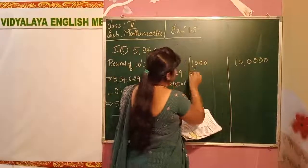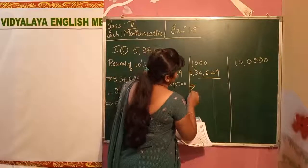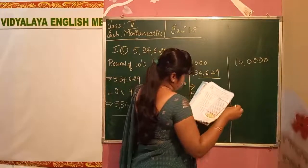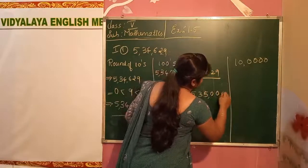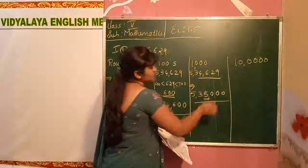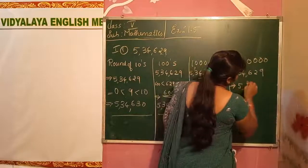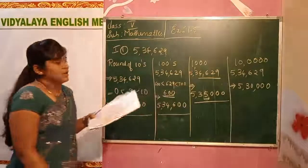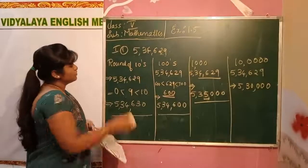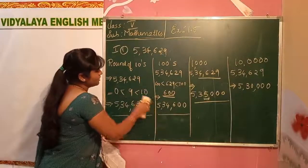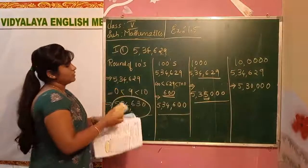Next, thousands place. Five lakh thirty-four thousand six hundred and twenty-nine. We have to see the thousands place — it is rounded off to five lakh thirty-five thousand. And for ten thousand: five lakh thirty-four thousand six hundred and twenty-nine rounded off to ten thousands gives five lakh thirty thousand. Copy the rounded off numbers only — the rounded off number is what is needed. Understood?